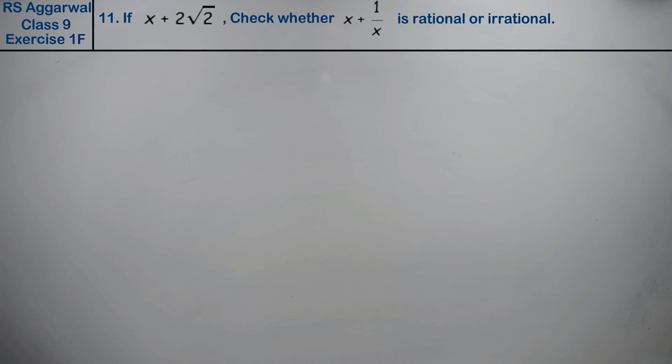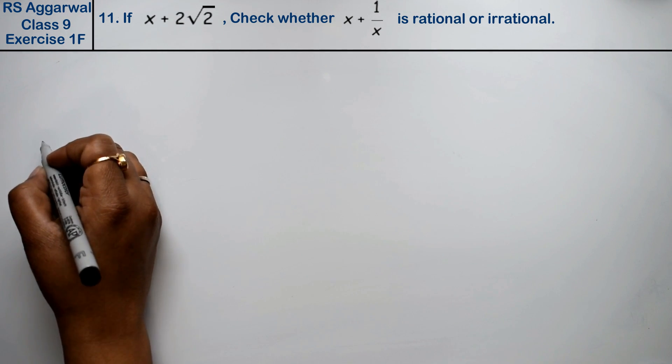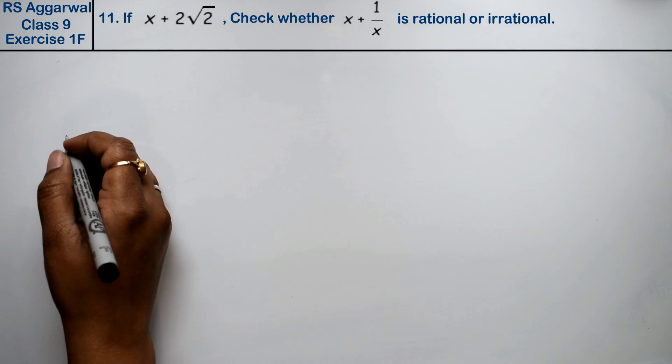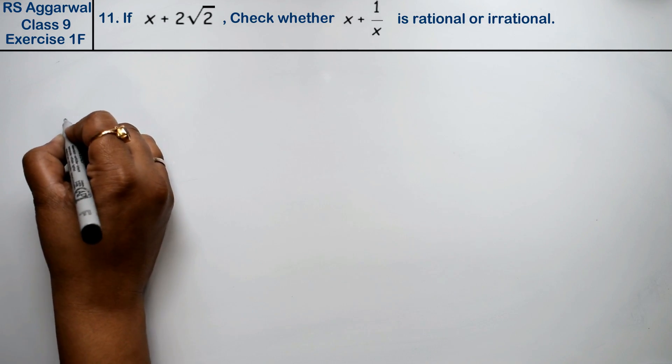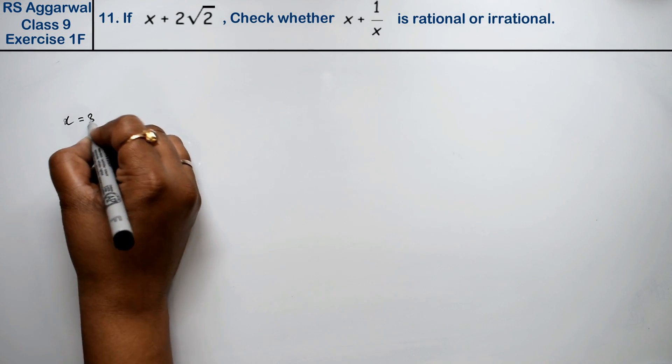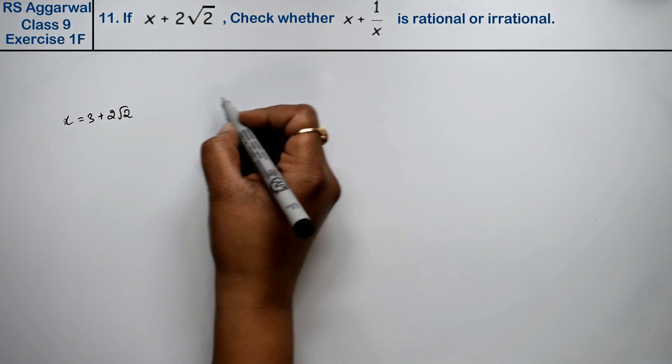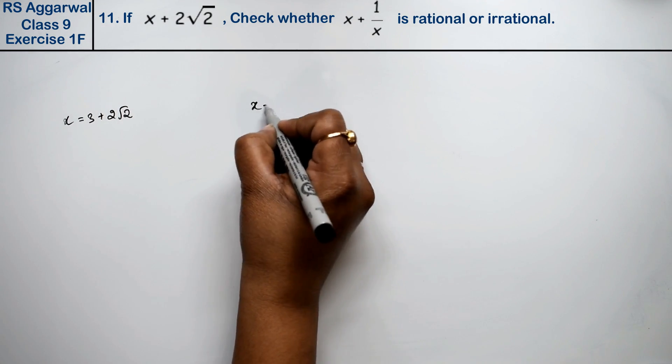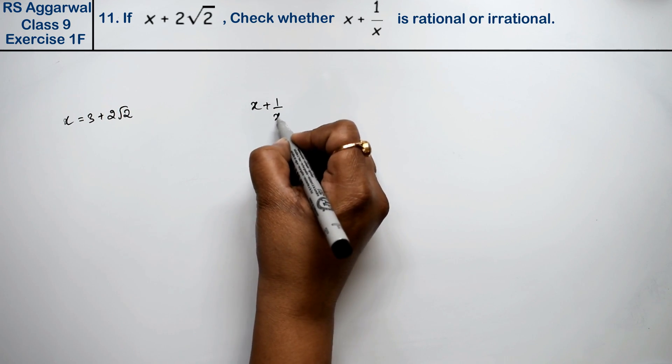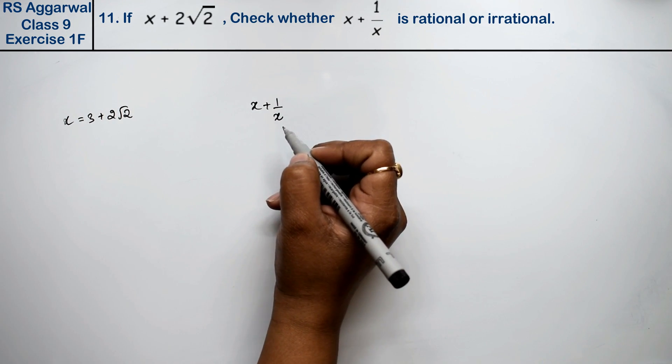Let's do question number 11 of exercise 1F, that is number system. Question number 11: If x equals 3 plus 2 root 2, check whether x plus 1 upon x is rational or irrational.